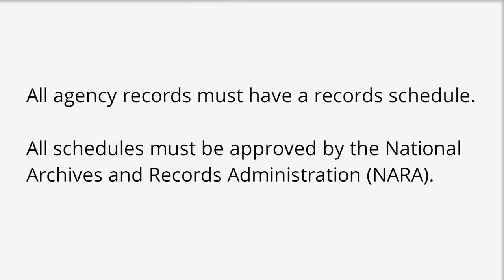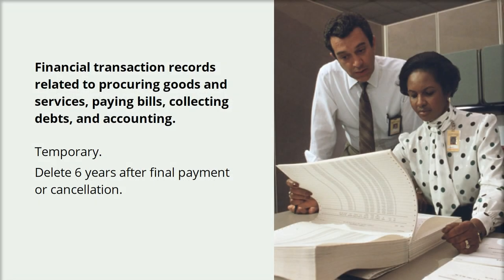In the U.S. federal government, record schedules are required. Agencies must have schedules for their records, and those schedules must be approved by the National Archives and Records Administration. An approved record schedule tells us how long we must keep records to support the agency's work, to protect legal rights and interests, and to document our history.